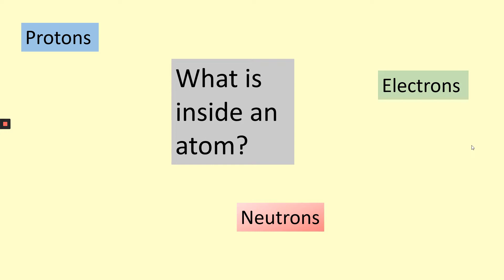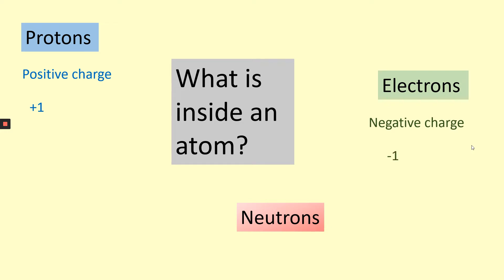Then we need to think about the properties — what information do we know about each particle? We know that a proton has a positive charge of plus one. We know that an electron has a negative charge of minus one. And we know that a neutron has a neutral charge — we say it has a numerical value of zero.